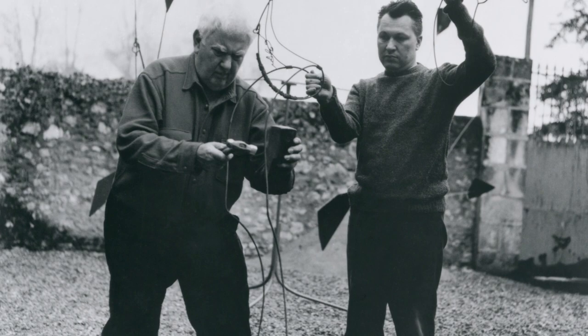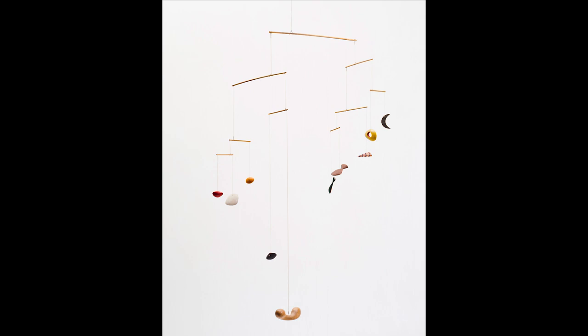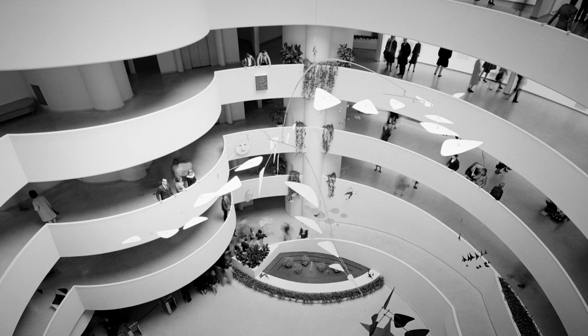Alexander Calder is an American sculptor who's probably best known and credited for the origination of the mobile, a sculpture that hangs and circulates by the air currents and by gravity.